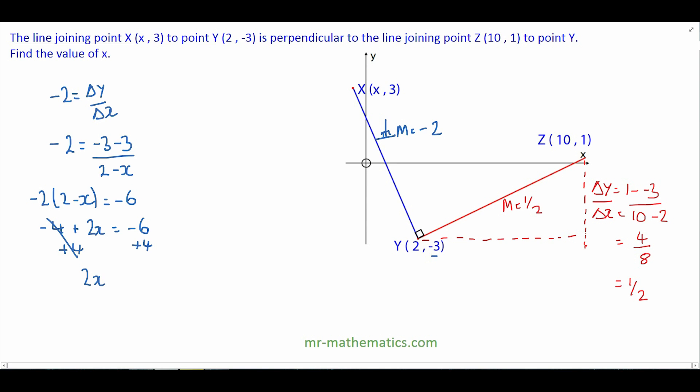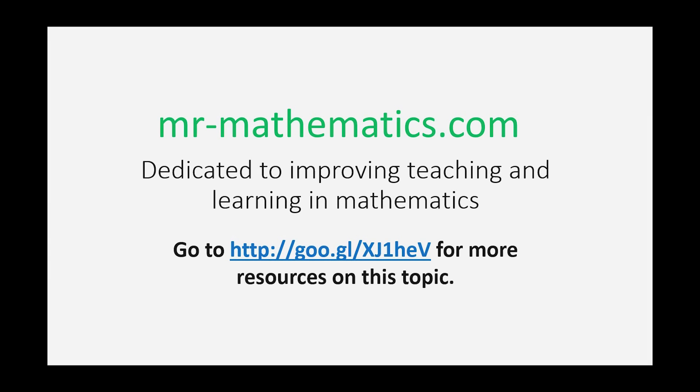So 2x will equal negative 2. Divide both sides by 2. So x will equal negative 1. Therefore, the x coordinate of the blue line segment is negative 1.